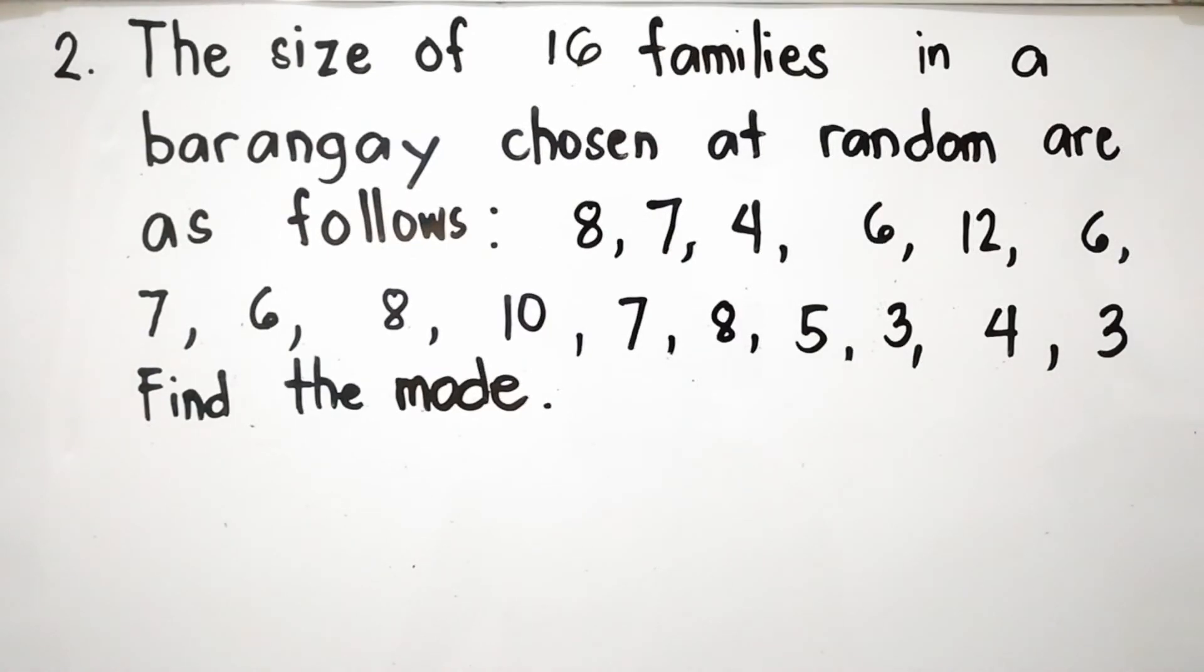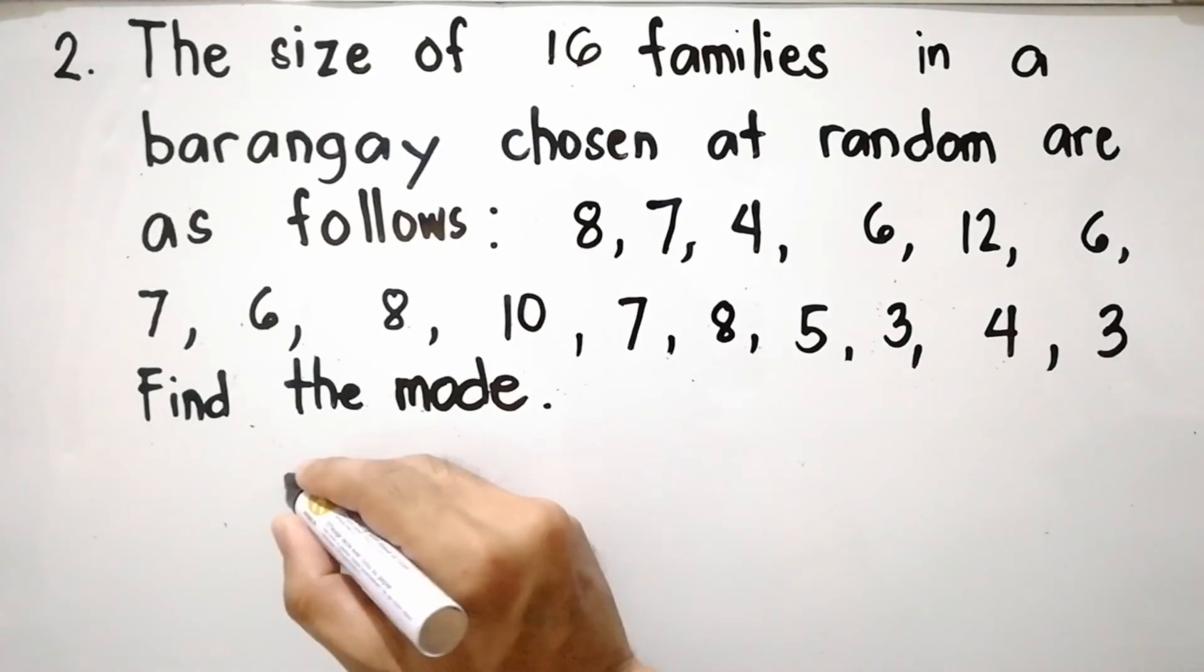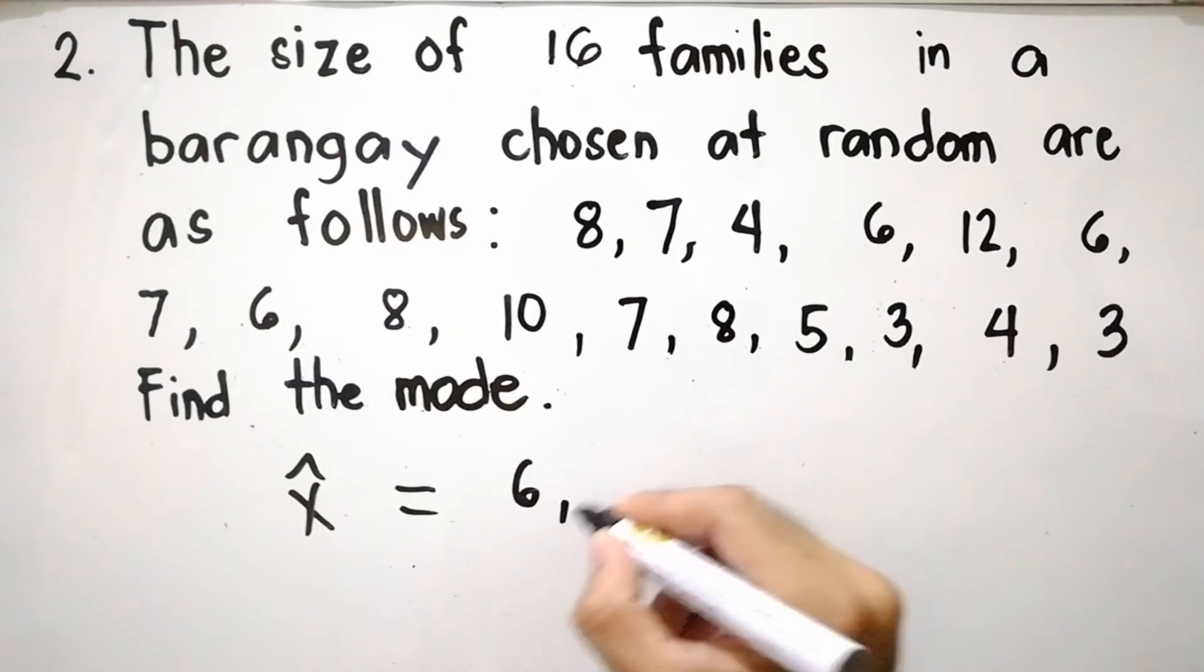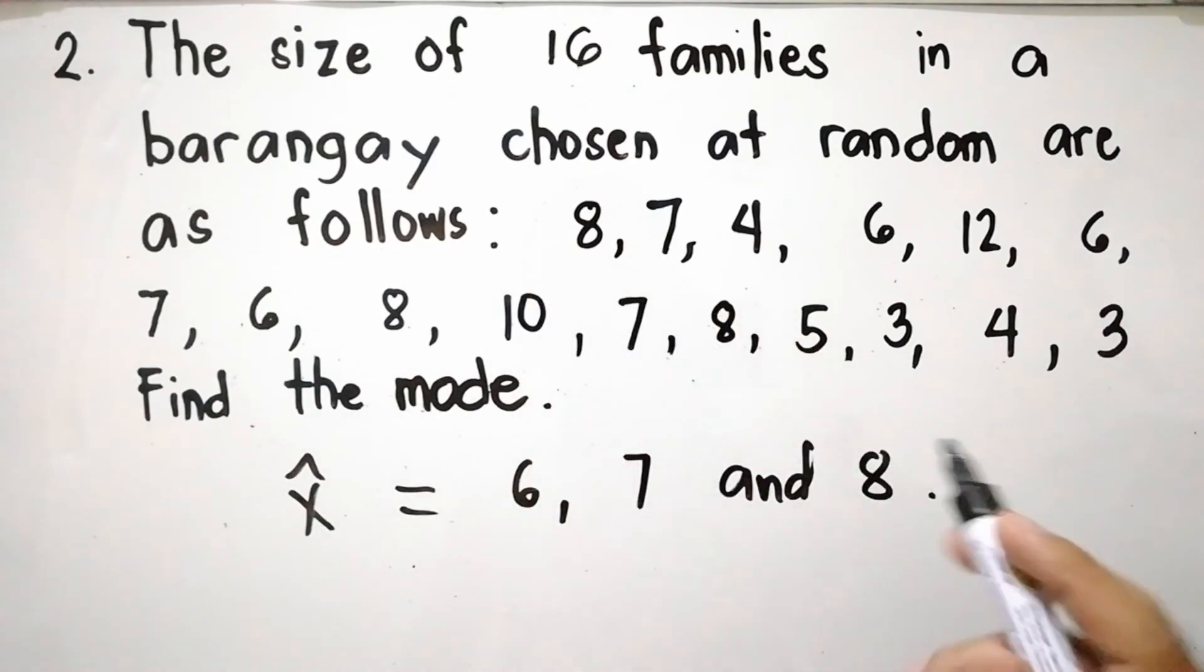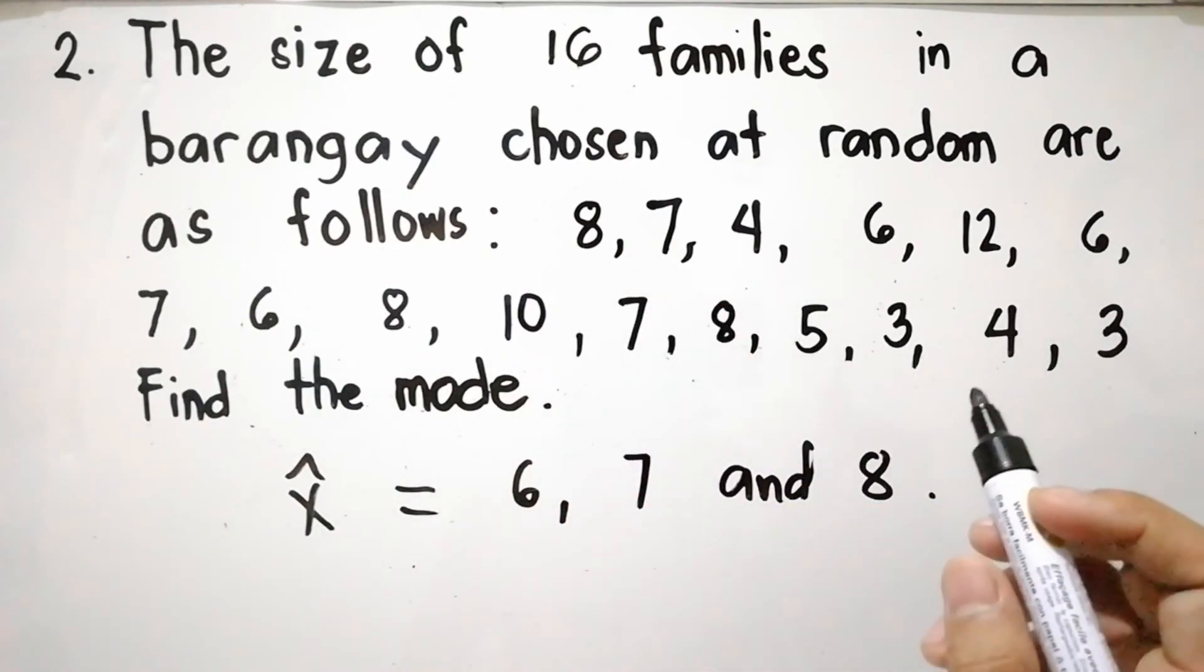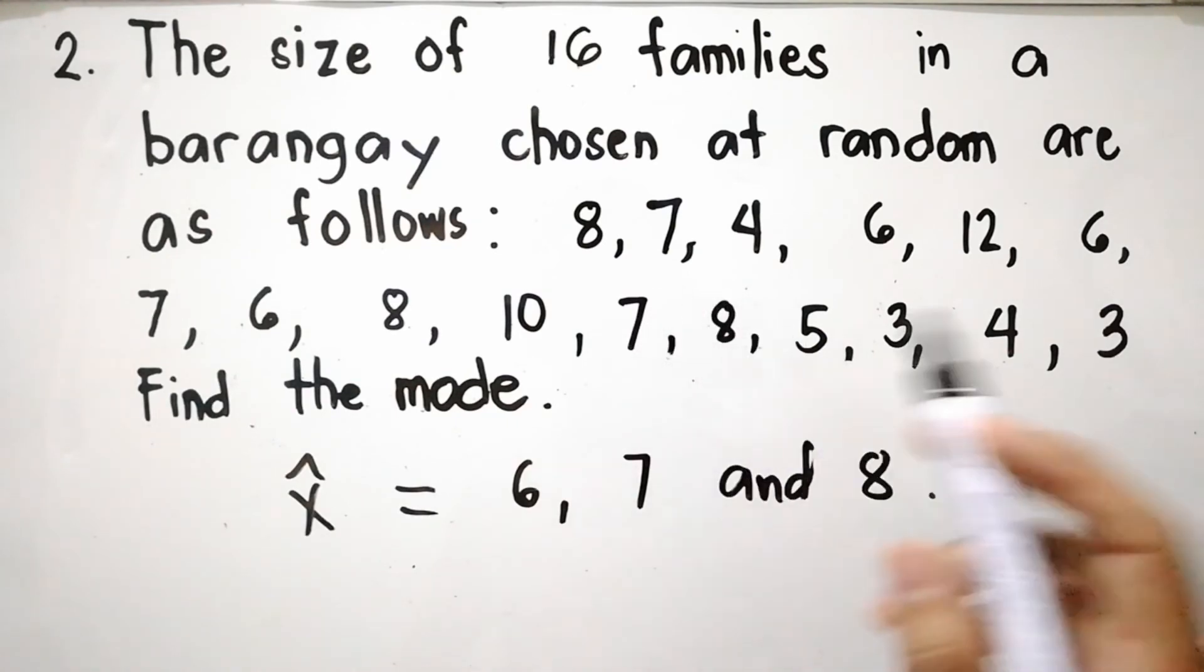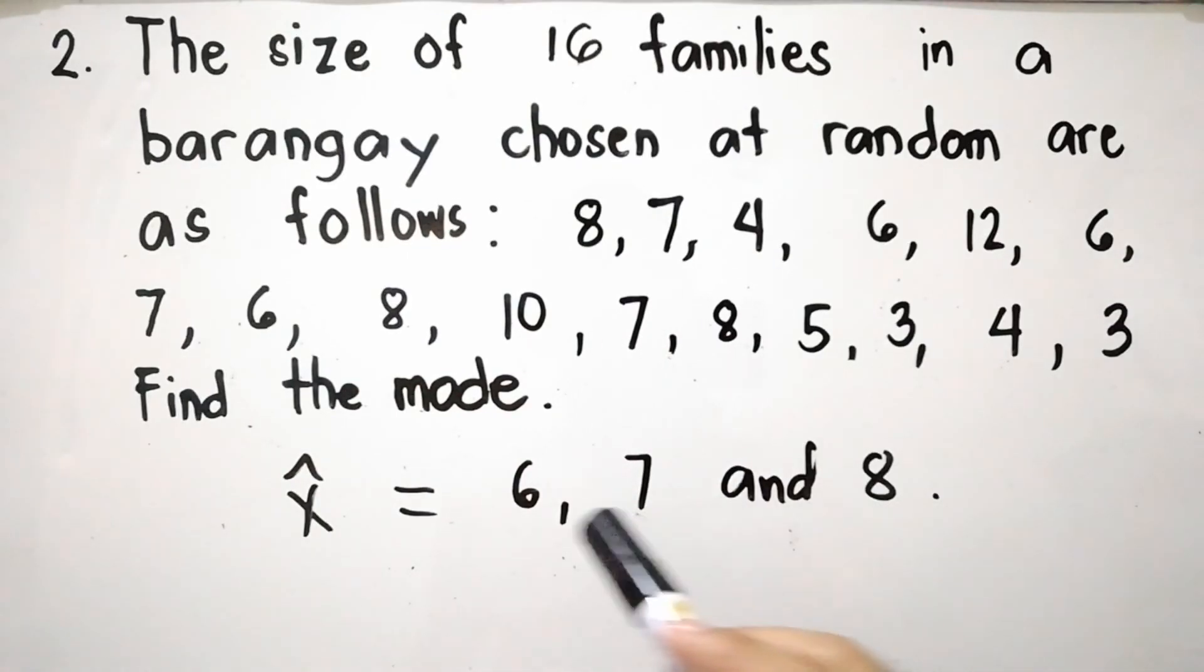Again, mode is the most frequent value or the measure that occurs the most number of times. In this case, the mode denoted as x-hat are 6, 7, and 8, since 6, 7, and 8 are repeated thrice. Since we have three modes in the data, it is classified as trimodal.